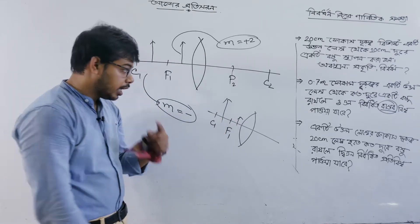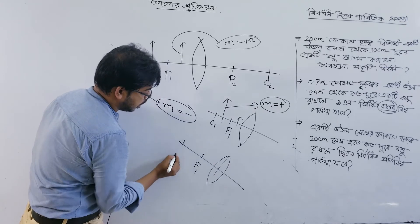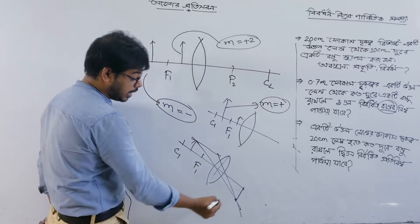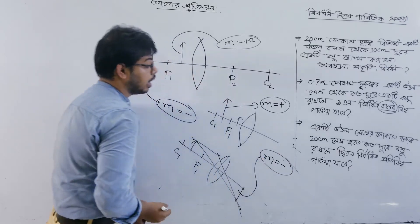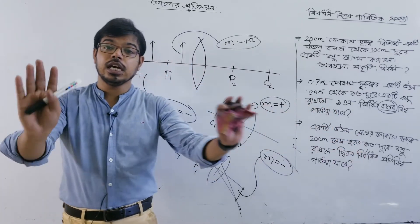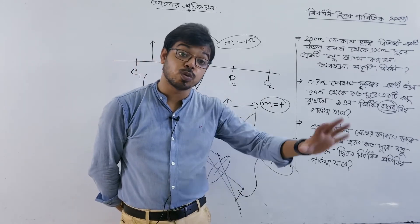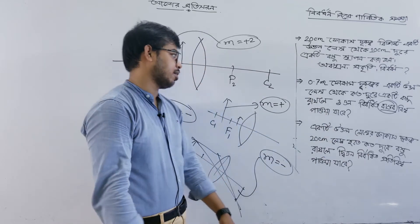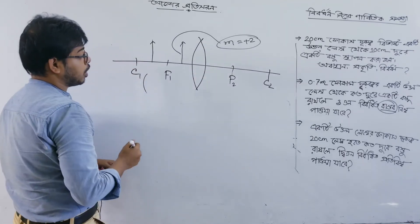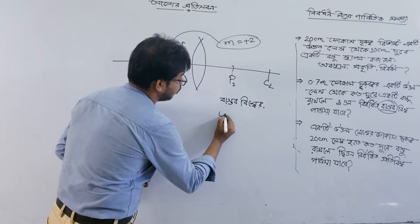That means it is positive — bringing it back to the main point. The first condition: if the object is within the focal length, the image is virtual and erect. The formula applies: the first case gives one result, the second gives another. So what does u equal in this spread of cases?